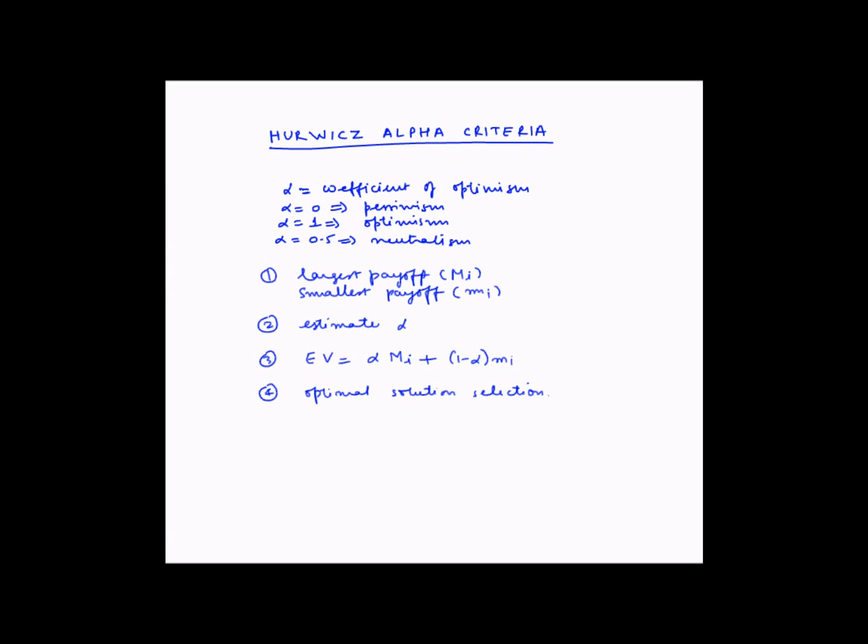Let us now look at how we can solve this case using the Hurwicz alpha criteria. Let us assume that alpha equals 0.7 for this case. Now let us build the payoff matrix. We have strategies, that is model A and B, and we have MAX (capital M_i) and MIN (small m_i).